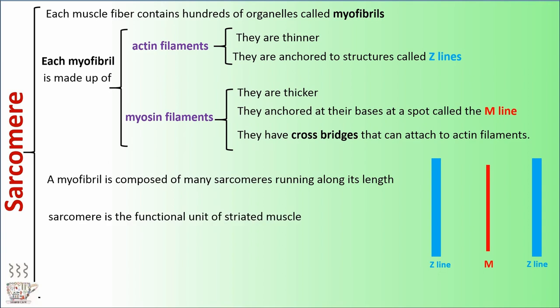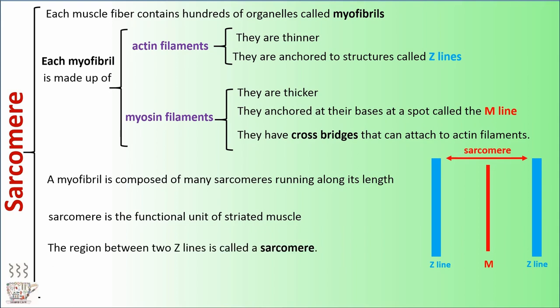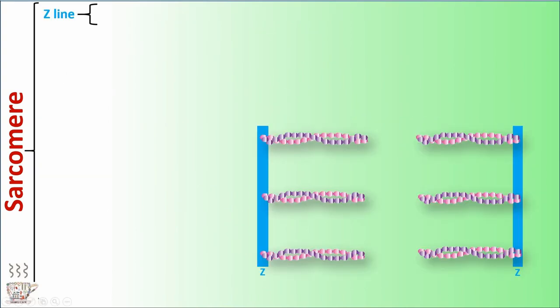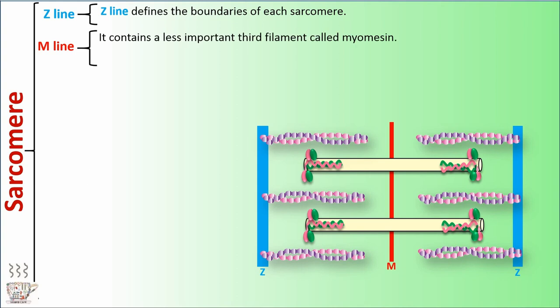The sarcomere is the functional unit of skeletal muscle. The region between two Z lines is called a sarcomere. Within a sarcomere, myosin filaments overlap the actin filaments. The Z line defines the boundaries of each sarcomere. The M line contains a less important third filament called myomesin, and is found right in the middle of the Z lines.